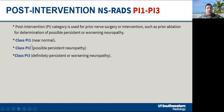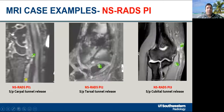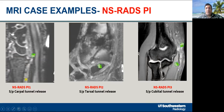Post-intervention states are described as near normal, possible persistent, or definitely persistent or worsening neuropathies, classified as PI 1, 2, and 3. Examples include an enlarged medial plantar nerve from prior tarsal tunnel release, and an angulated, irregular, heterogeneous nerve from prior cubital tunnel release, which would be PI 3.